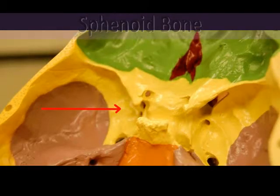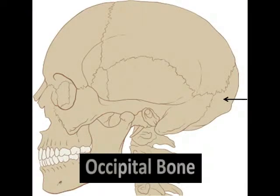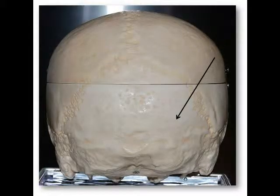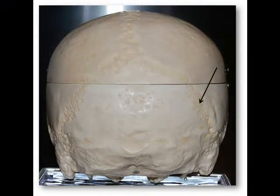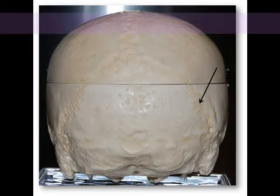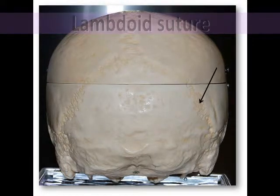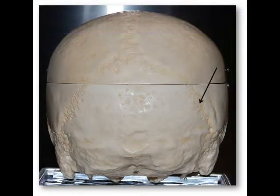The occipital bone is the cranial bone located at the back of the head. It forms the posterior and most of the base of the cranium. From this posterior view, you can see how the occipital bone fuses with the two parietal bones at the lambdoid suture. This suture is referred to as lambdoid because its shape resembles the Greek letter lambda, which resembles an upside-down letter V.